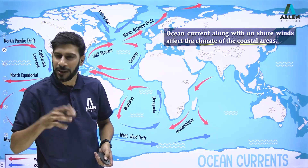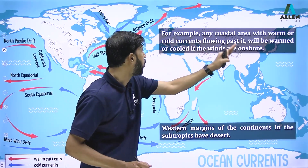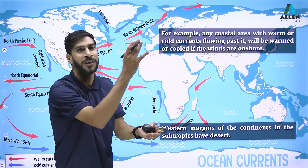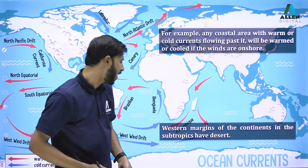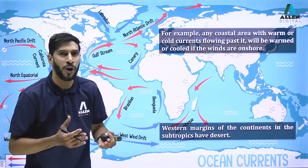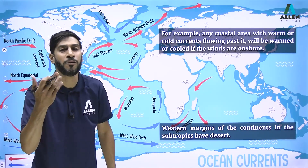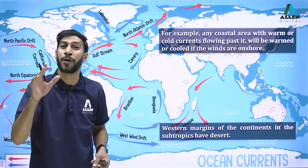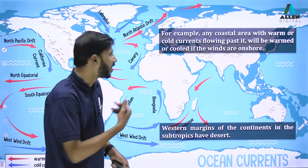Any coastal area with warm or cold currents flowing past it will be warmed or cooled if the winds are onshore. Winds from warm ocean currents bring warmth and moisture; winds from cold oceanic currents are cool and dry. Western margins of continents in the subtropics have deserts because cold oceanic currents there carry no moisture, resulting in no rainfall, which leads to the formation of deserts.